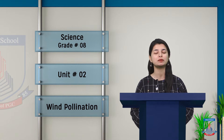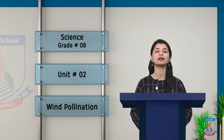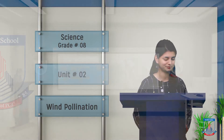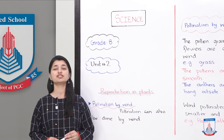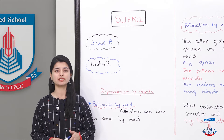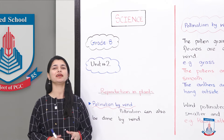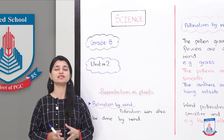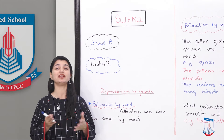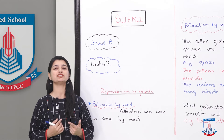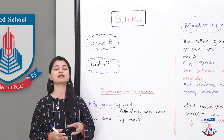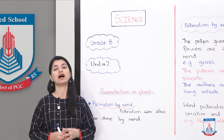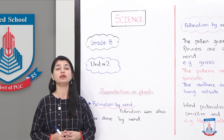So far we have focused on insect pollination, so today we have to focus on wind pollination. In reproduction in plants, we have mostly been focusing on insect pollination because with flowers there is a tendency towards associating them with insects. But there are also other types of pollination, and one thing we are going to discuss today is wind pollination.